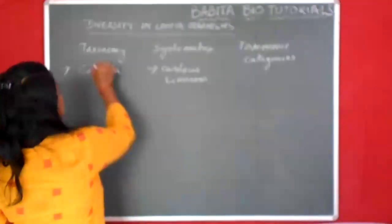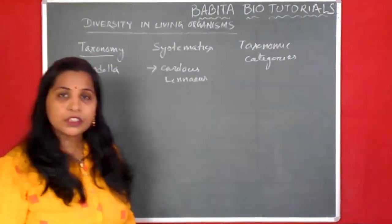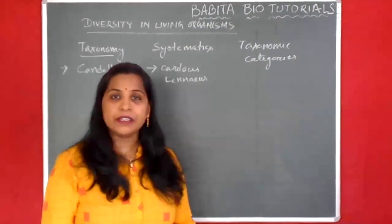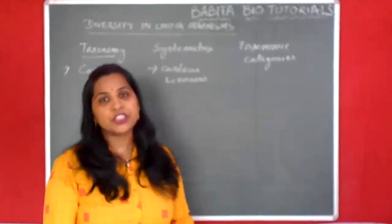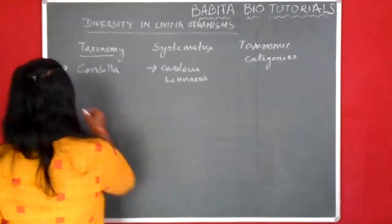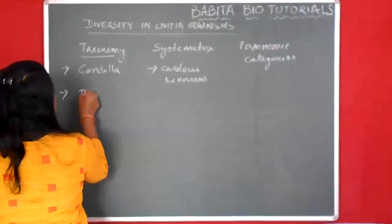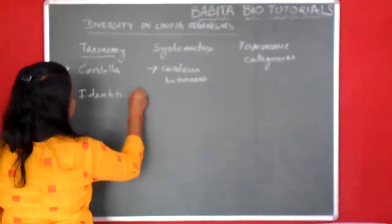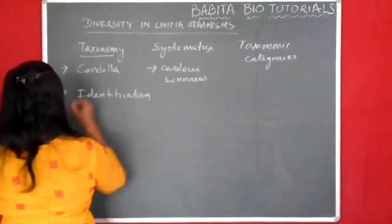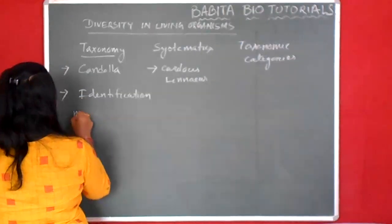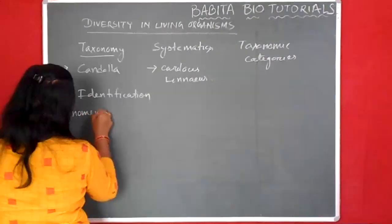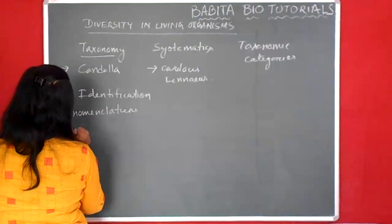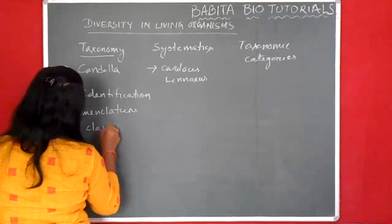What is Taxonomy? Taxonomy is the branch of science which deals with the classification, identification, and nomenclature of organisms.